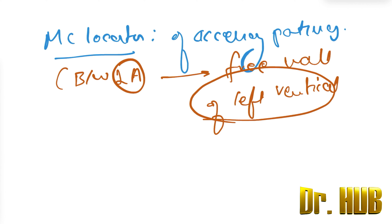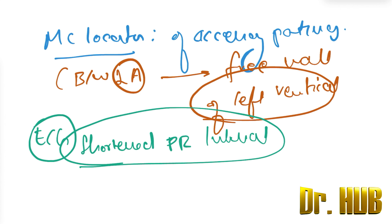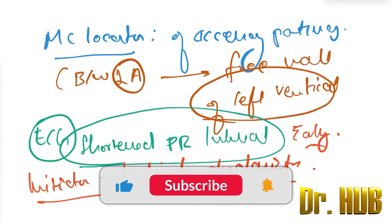Looking at the ECG changes: there is a shortened PR interval. This occurs because of the early initiation of ventricular depolarization via the accessory pathway.